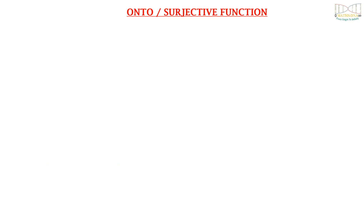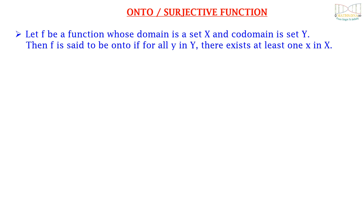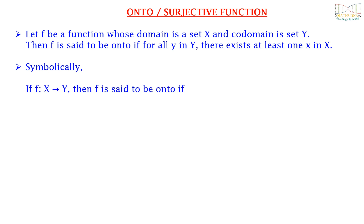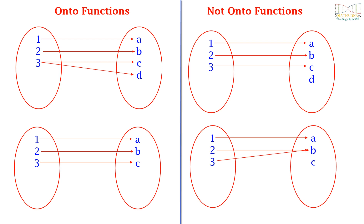Now, what are onto or surjective functions? Let f be a function whose domain is a set X and co-domain is a set Y. Then f is said to be onto if for all y in Y there exists at least one x in X such that f(x) is equal to y. The functions on the left side are onto because for each element in co-domain there exists a preimage in domain. But the functions on the right side are not onto, as there does not exist a preimage for d and also for c in the co-domain.